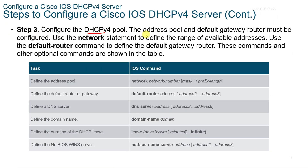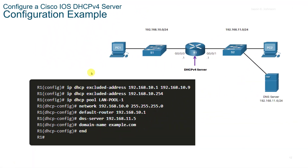In step three, we configure the v4 pool. The address pool and default gateway must be configured. Use the 'network' statement to define the range of available addresses, and the 'default-router' command to define the default gateway router. Optional commands shown in the table allow you to define the DNS server, domain name, duration of the lease, and the NetBIOS WINS server. In the configuration example, we set the excluded address range, the pool name, network, default router, DNS server, and domain name.